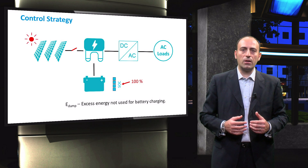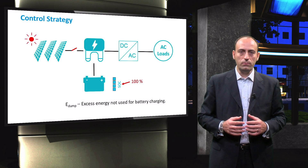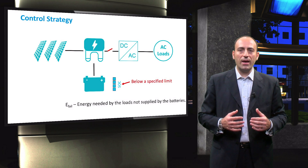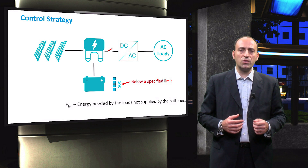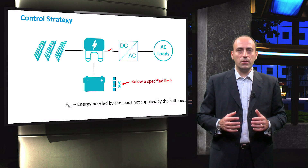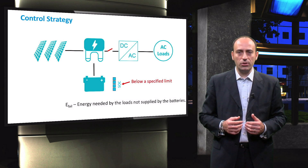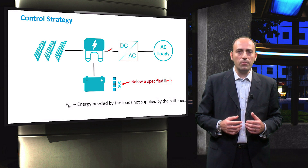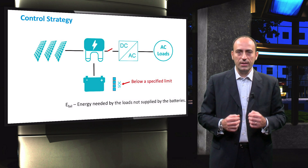In the control strategy algorithm, this means that the parameter E-dump is calculated. On the other hand, while feeding a load, when the battery bank SOC goes below a specified lower limit, the inverter side switch is opened. This means that the battery will fail to supply energy to the loads. In the control strategy algorithm, this means that the parameter E-fail is calculated.